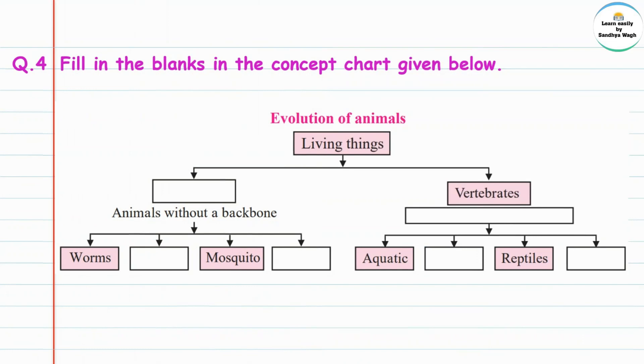Question 4: Fill in the blanks in the concept chart given below. Evolution of animals. The chart shows living things divided into invertebrates and vertebrates. Vertebrates means animals with a backbone.